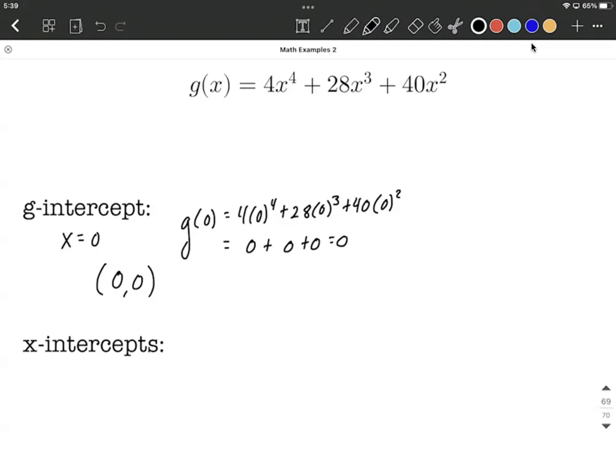Now to find the x-intercepts, it's important that we factor this polynomial. In its factored form, we're going to be able to look at it one factor at a time and figure out when each one of those individual factors equals 0. So getting started with our factoring, we want to think about a greatest common factor first.